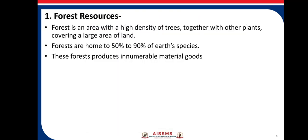Now, types of natural resources. There are five types of natural resources. First is forest resources. Resources obtained from forest are called forest resources. A forest is an area with high density of trees, together with other plants, covering a large area of land.